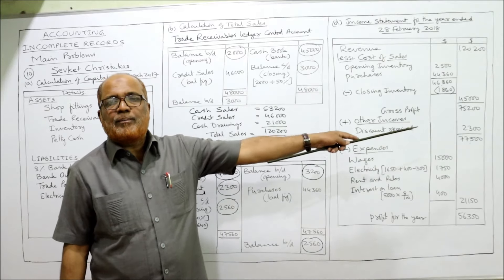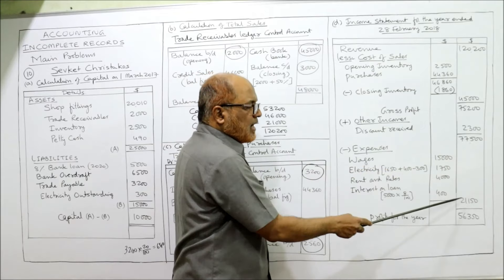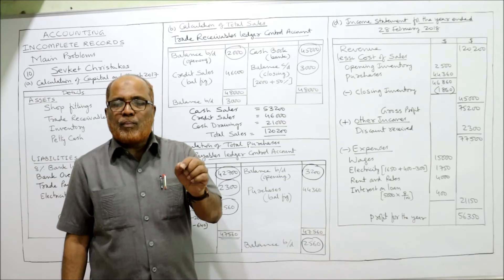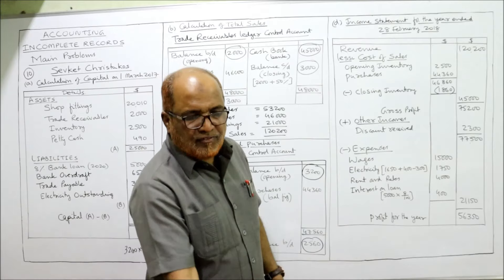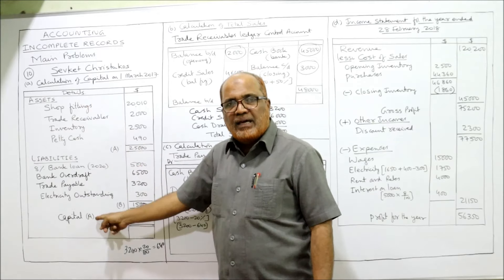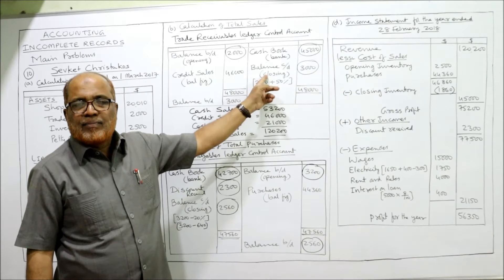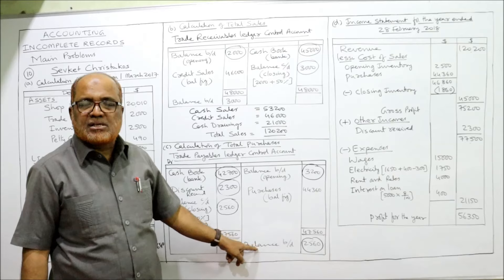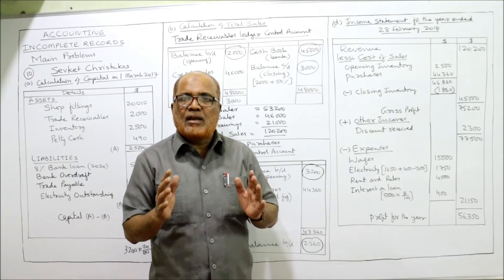Profit for the year = $77,500 minus $21,150 = $56,350. In this problem we prepared four things: capital at the beginning of the year, total sales, total purchases, and the income statement showing profit for the year.